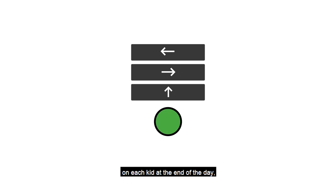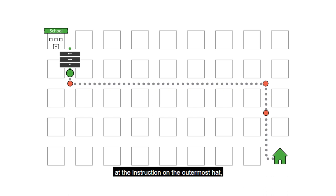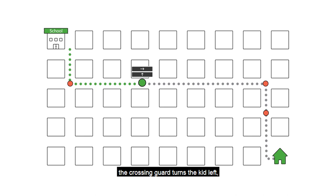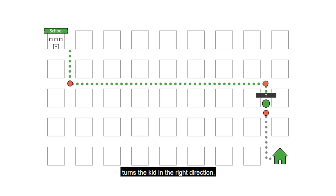Rather than putting one cap on each kid at the end of the day, she would put many caps on each kid. Each cap had an instruction: turn left, turn right, or proceed straight without turning. When a kid arrives at an intersection, the crossing guard looks at the instruction on the outermost hat and executes it. If the cap said turn left, the crossing guard turns the kid left, takes the top hat away, and sends the kid on his way. The next crossing guard looks at the instruction on the top of the stack of hats, takes that hat away, turns the kid in the right direction, and sends the kid on his way. At the end of the afternoon, every kid arrives home hatless.